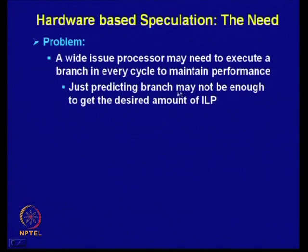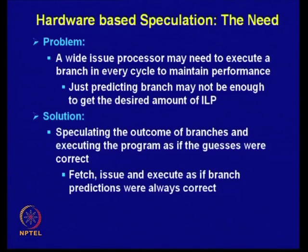Just predicting branches may not be enough to get the desired amount of instruction-level parallelism. The ILP achievable simply by branch prediction is insufficient to keep the various functional units present in a superscalar processor busy. A superscalar processor has multiple functional units, and it is essential to keep them busy to get higher throughput.